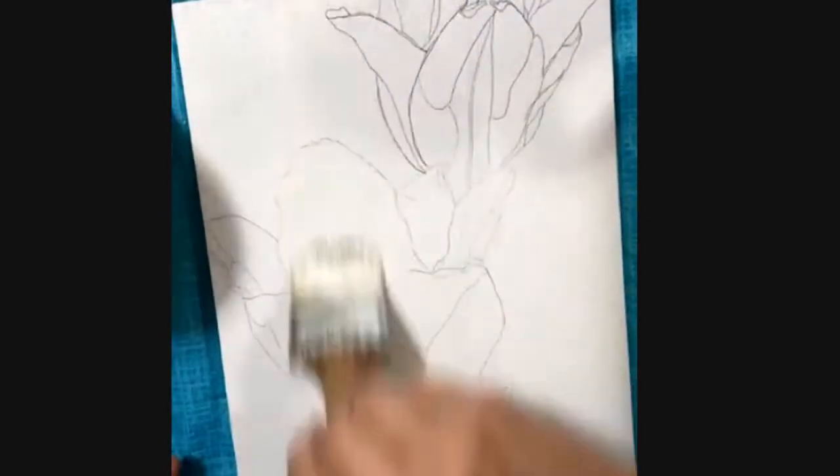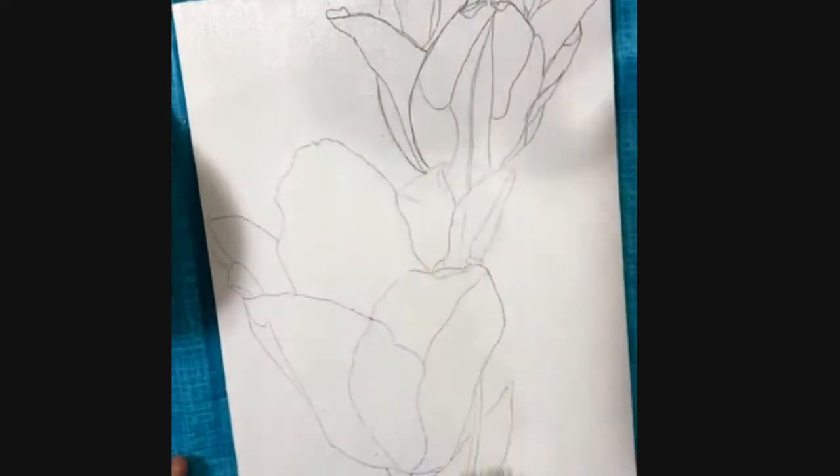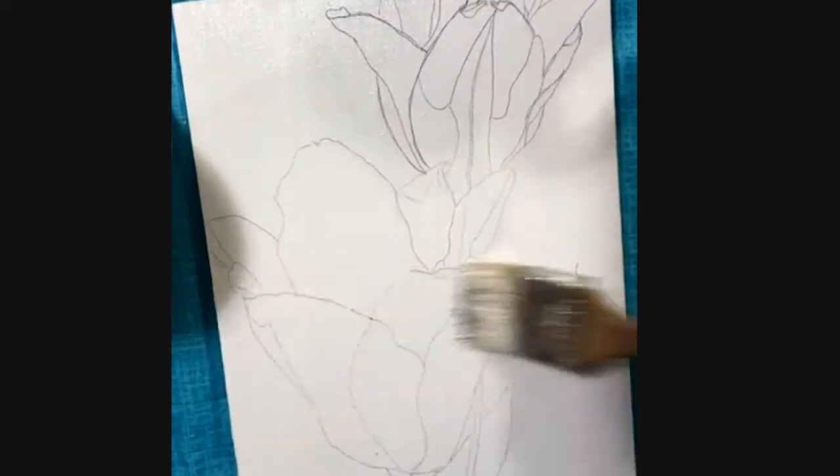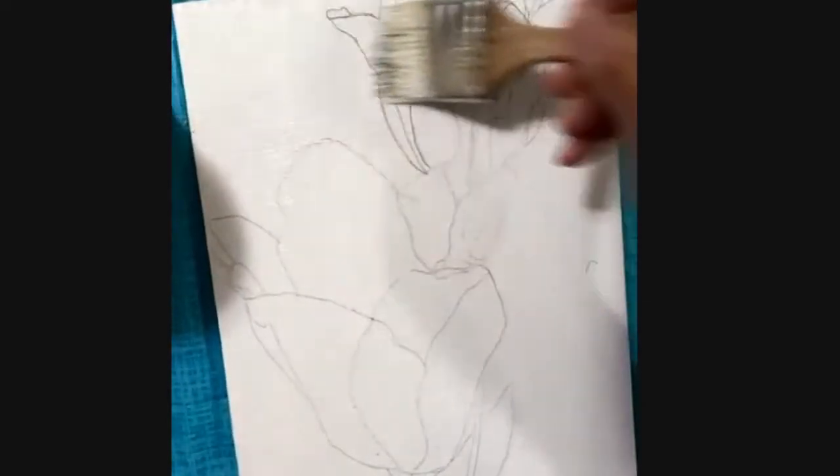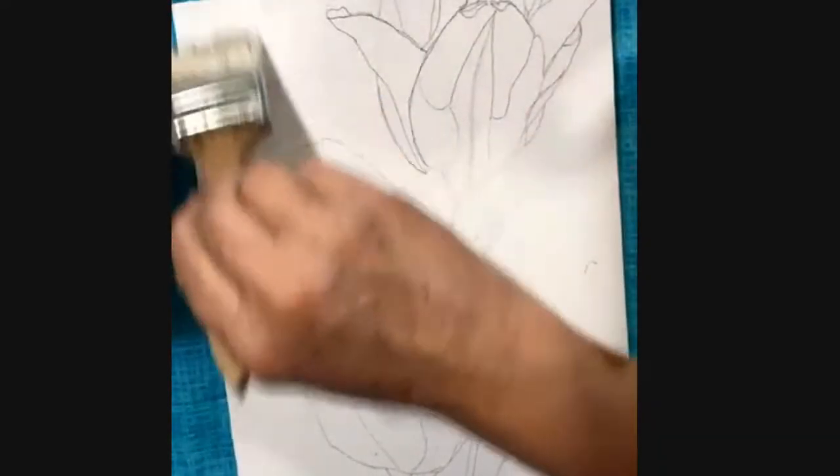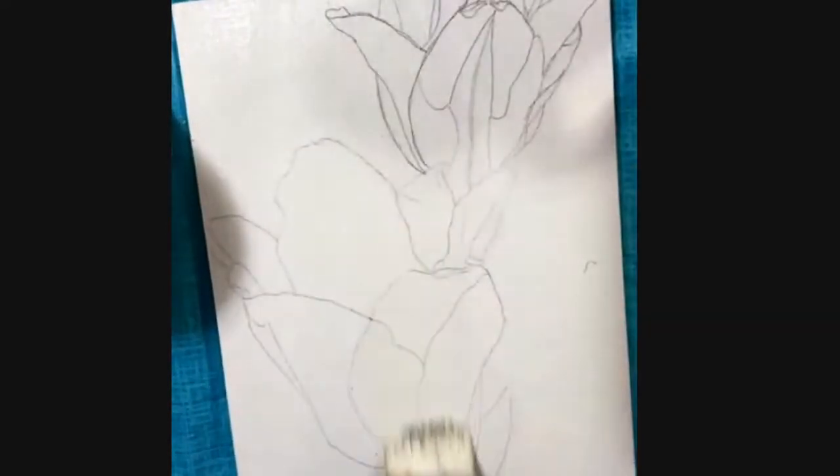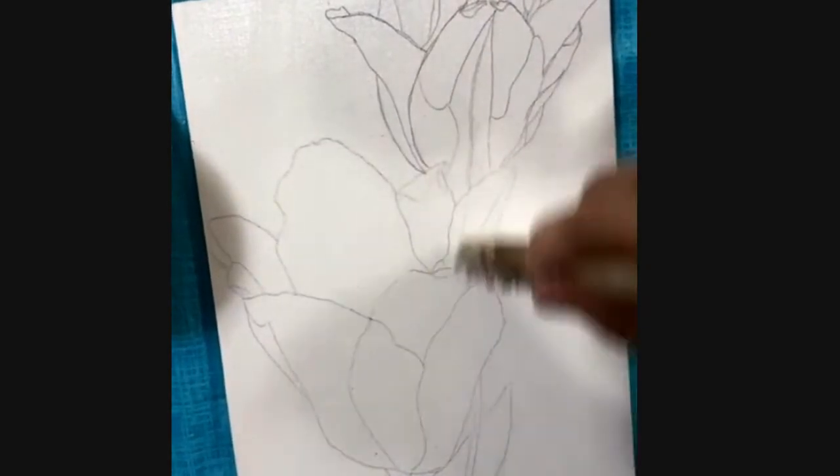So just a nice smooth layer of clear gesso will seal this. And I just like to make sure I don't have any identifying lines. And if you do the back and forth like this that just really helps. And you just only need one coat that'll seal it just fine.